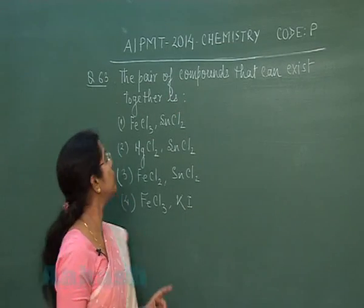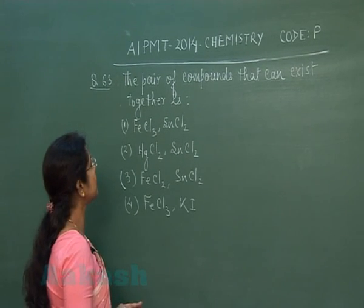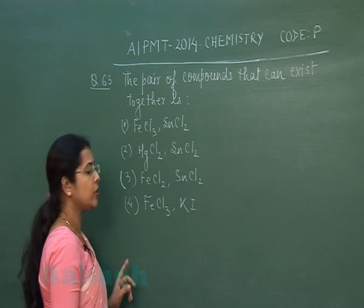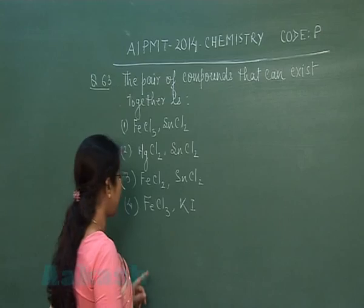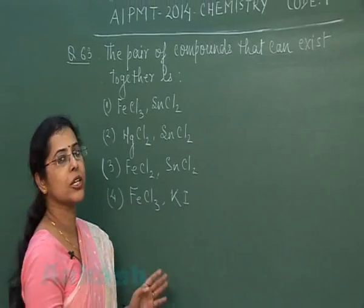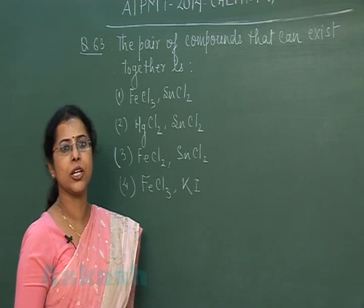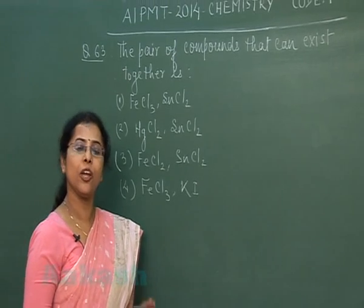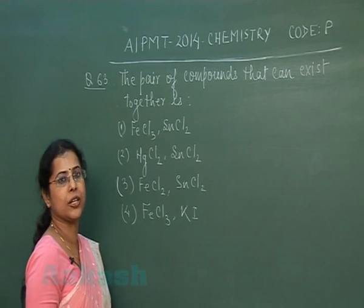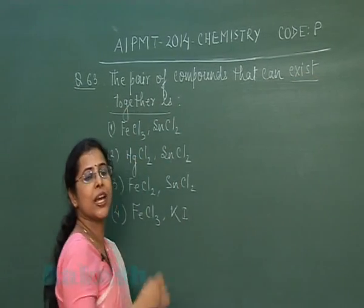Our next question is question number 63: the pair of compounds that can exist together is — (1) FeCl₃ and SnCl₂; (2) HgCl₂ and SnCl₂; (3) FeCl₂ and SnCl₂; (4) FeCl₃ and KI. When solving such questions, remember: an oxidizing agent and a reducing agent cannot be kept together; two oxidizing agents or two reducing agents can coexist.